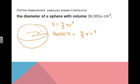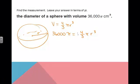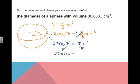We got 36,000π = 4/3πr³. To get rid of that 4/3, we should multiply both sides by the reciprocal. Multiply both sides by 3/4. And those will cancel. We've got 3 times the 36,000 and divide that by 4. And we end up with 27,000π = πr³. Divide both sides by pi.